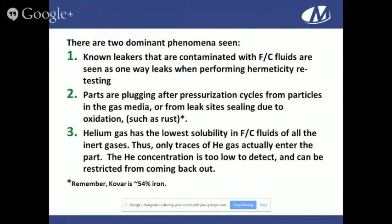The two dominant phenomena seen in these leakers are: known leakers contaminated with fluorocarbon, seen as one-way leaks during hermeticity testing; and parts that are plugged during the pressurization cycle — maybe particles in the gas media from leak sites or oxidation such as rust in the seal area. Additionally, helium gas has the lowest solubility in fluorocarbon of all the inert gases. So even when performing a pressurization cycle on a part that has been subjected to fluorocarbon, helium is least likely to make it in, or the concentration that does may be too low to be detected by the mass spectrometer.